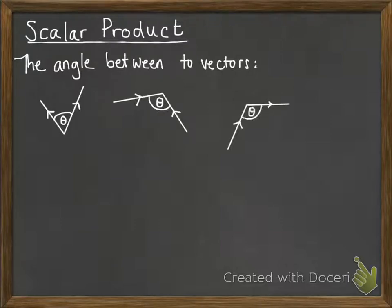Now have a look at these three situations we've got here. The first one has two vectors diverging from a point. The second one has two vectors converging to a point, so they're coming together to the same point.